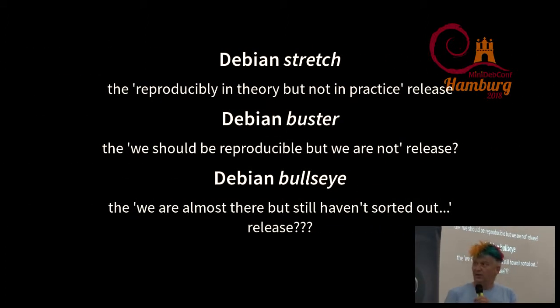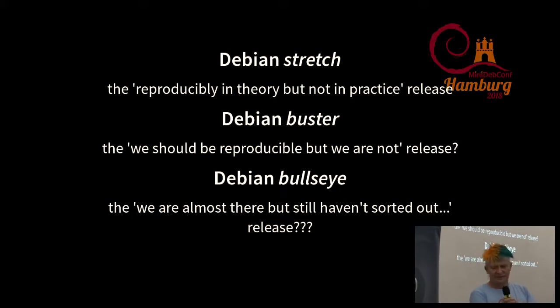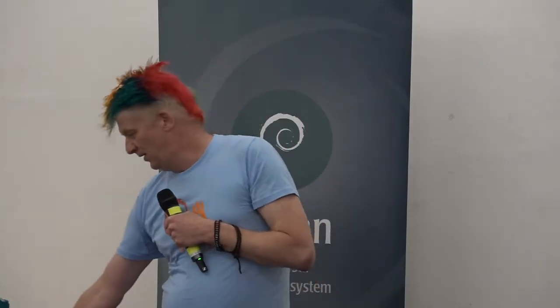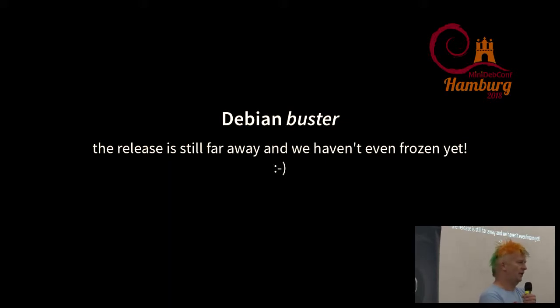Stretch was the release that was reproducible in theory but not in practice — we had the patches in there but didn't rebuild the packages. Buster is where packages should be reproducible per policy, but we are not yet there. Bullseye might be the release where we still haven't made it — which would be very disappointing. But Buster isn't released yet, it's not even frozen, there's at least half a year to work on these things, so maybe we can make Buster a lot better than it currently looks.